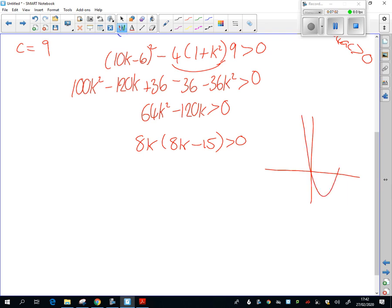So what would that look like if I were to sketch it? Well, it would have roots at 0, so that's k, roots at 0 and 15 over 8. I want that to be greater than 0. So it would be those two end bits there. So it's when k is less than 0, or when k is greater than 15 over 8.